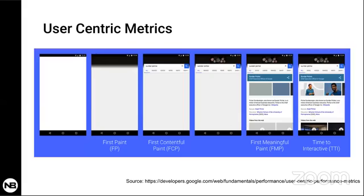Before looking at tools, there are some user-centric metrics I found very useful on a Google developers page — I've added the link here. Loading a website is not just waiting for the full content to appear; there are different stages between entering the URL and getting the entire content that psychologically give feedback to the user that something is moving, and if that doesn't happen fast enough your user will abandon your page.